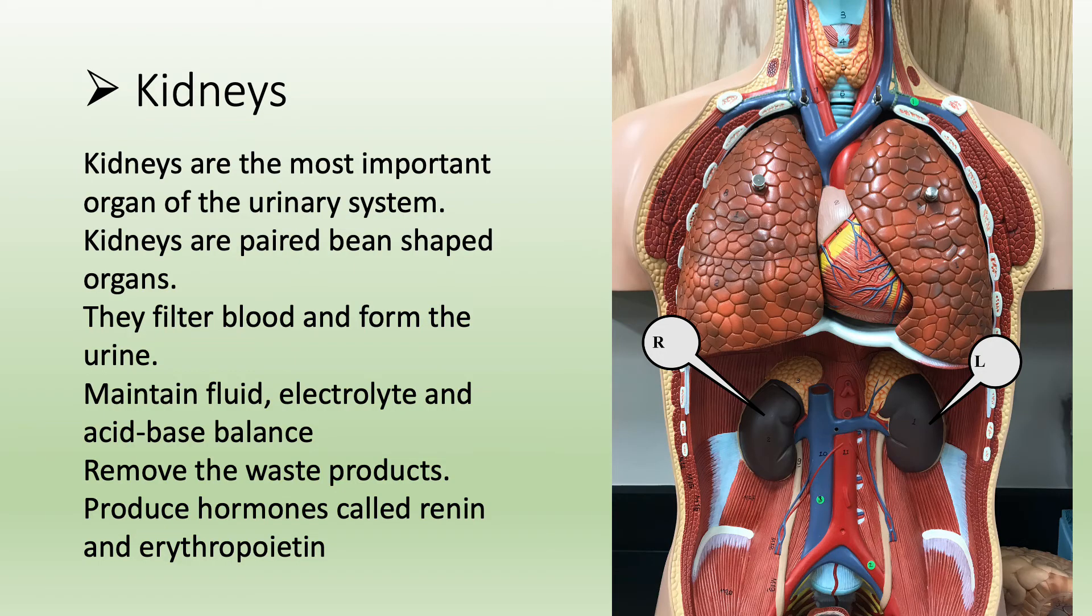Kidneys are the most important organs of the urinary system. They are shown on the torso model with right kidney labeled R and left one with L. Kidneys are paired, bean-shaped organs. They filter blood and form the urine, maintain fluid, electrolyte, and acid-base balance, remove waste products, and produce hormones called renin and erythropoietin. Kidneys are retroperitoneal organs. That means they are behind the protection of peritoneum.